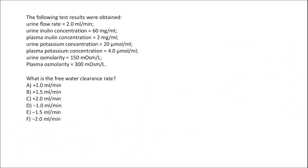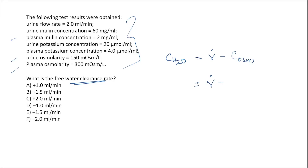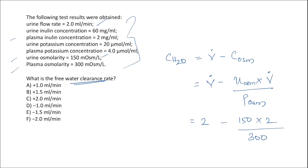This question involves calculation of free water clearance from given data. The formula is: free water clearance = urine flow rate − osmolar clearance, which expands to urine flow rate minus (urine osmolarity × urine flow rate / plasma osmolarity). Feeding in the values: urine flow rate is 2 ml/min, urine osmolarity is 150, and plasma osmolarity is 300.